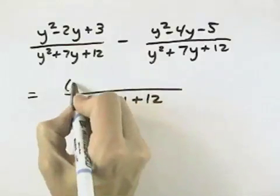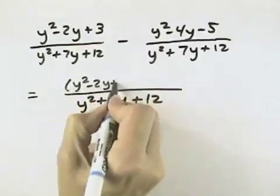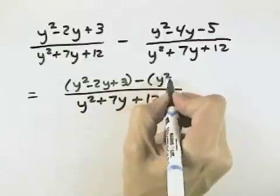We take the numerators and start with y² - 2y + 3, our first numerator, and subtract our second numerator from that.